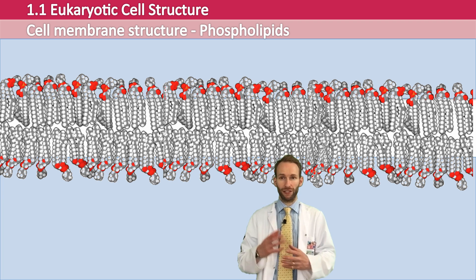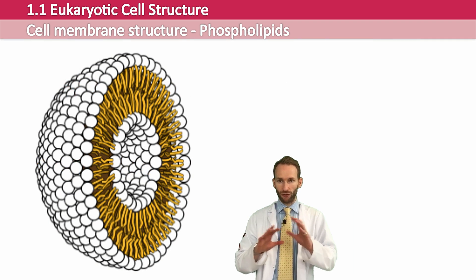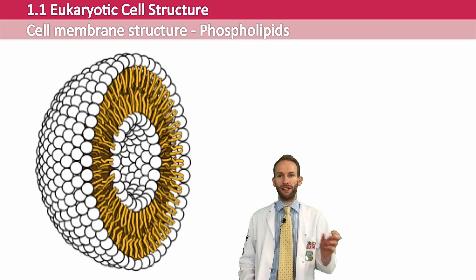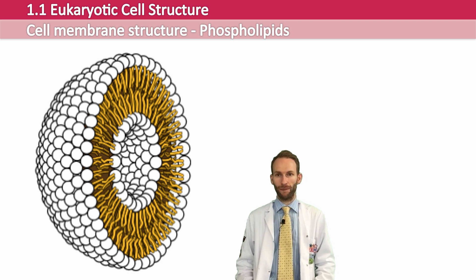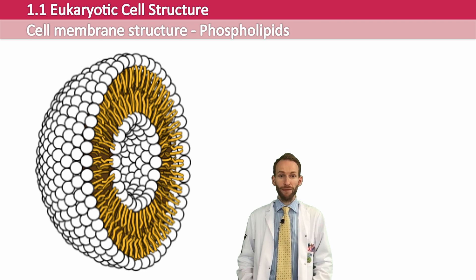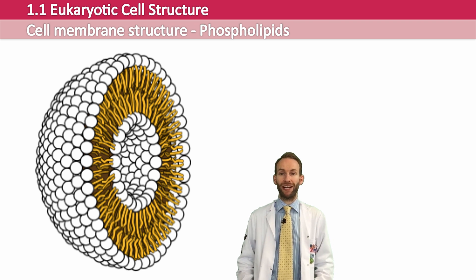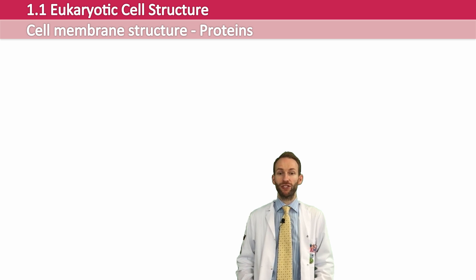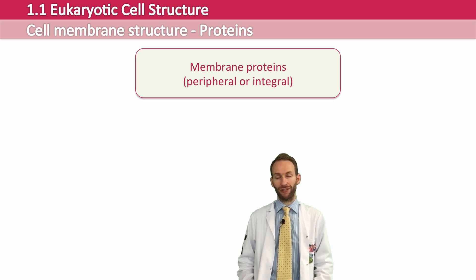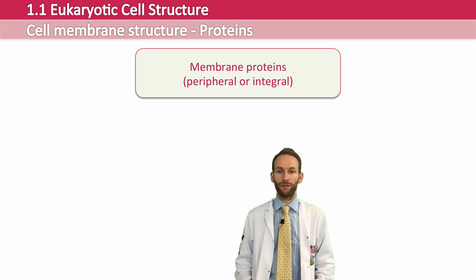The phospholipids aren't bonded to each other; they just arrange themselves in this order, creating a hydrophobic barrier where the fatty acid tails are, with water on the inside and outside. The other main components of cell membranes are proteins. These can be positioned throughout the whole membrane — what we call an integral protein — or only part of them is in the membrane, or on the outside or inside of the membrane, which are called peripheral proteins.